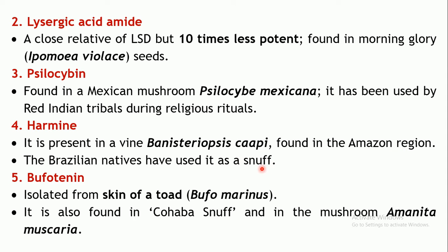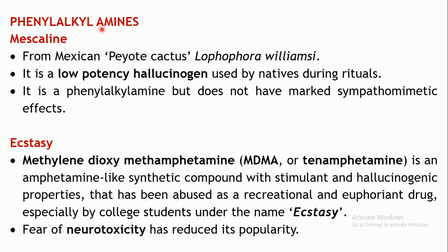Bufotenin is the next drug, usually isolated from the skin of toads — Bufo marinus is the source. This drug is also found in snuff and in the mushroom Amanita muscaria, which is one more source for bufotenin. The next class is phenylalkylamines, and mescaline is the example. It is found in the cactus Lophophora williamsii, the source for mescaline.